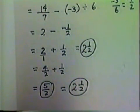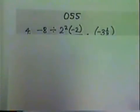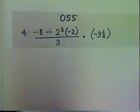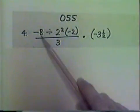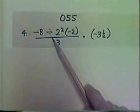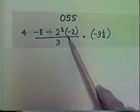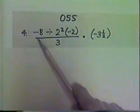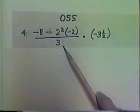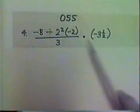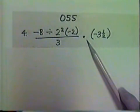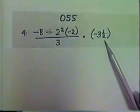Let's look at another example. This one has the appearance of fraction to start with again. We have negative 8 divided by 2 squared times negative 2, all of that over 3. All of that times the expression negative 3 and 1 half.